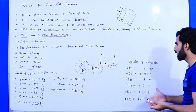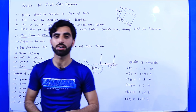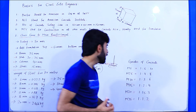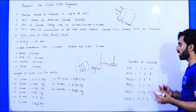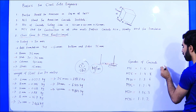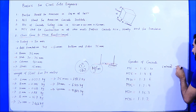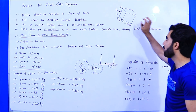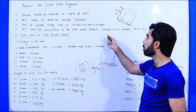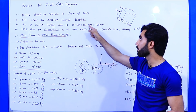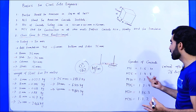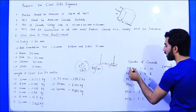Now, grade of concrete: 'M' stands for mix, and the number represents the compressive strength of concrete after 28 days in Newton per mm². For example, M5 means the compressive strength is 5 N/mm² after 28 days. For Neil concrete we use M7.5 or M10. The testing cube size is 150mm × 150mm × 150mm, placed in a compression machine where load is applied to check whether the compressive strength meets the required grade — for M5, M7.5, etc.